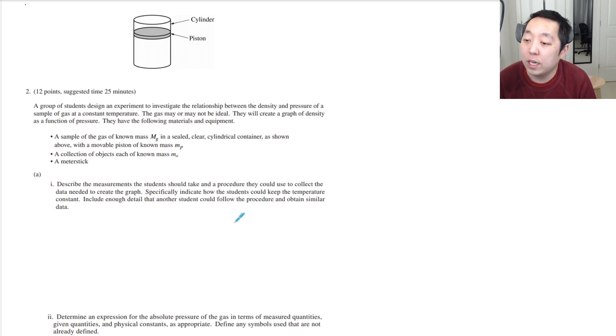A group of students designed an experiment to investigate the relationship between density and pressure of a sample of gas at constant temperature. The gas may or may not be ideal. They will create a graph of density as a function of pressure. They have a sample of gas of known mass Mg in a sealed clear cylindrical container with a movable piston of known mass Mp, a collection of objects each of known mass M0, and a meter stick. Describe measurements the students should take in procedure they could use to collect the data needed to create the graphs. Specifically, indicate how the students could keep the temperature constant.